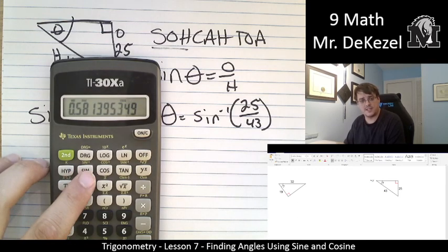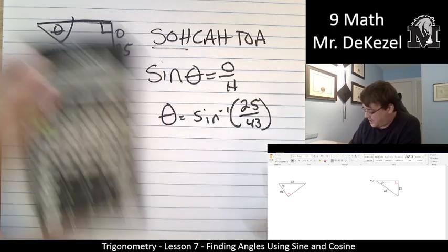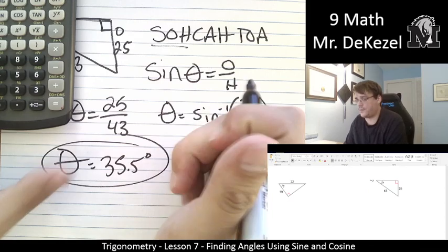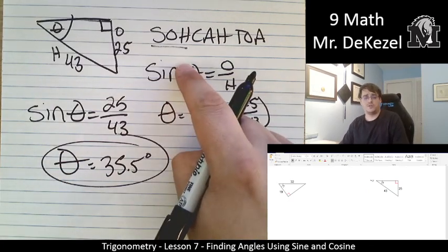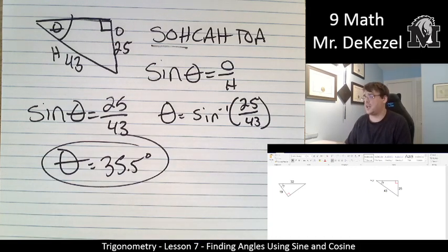And then, we will inverse sine. It's this button. So, I did the second function. Inverse sine. 35.5. So, again. We picked out which ratio we're going to use. Filled in the values. Did the inverse sine. Came up with our degrees.